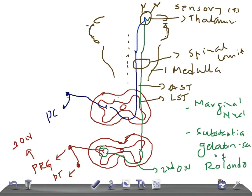The function of the lateral spinothalamic tract: it carries two important sensations — pain and temperature. Fibers arising from the marginal nucleus transmit impulses of fast pain sensation. Fibers arising from the substantia gelatinosa of Rolando transmit impulses of slow pain and temperature. So the marginal nucleus transmits fast pain, and the substantia gelatinosa of Rolando transmits slow pain and temperature sensation.